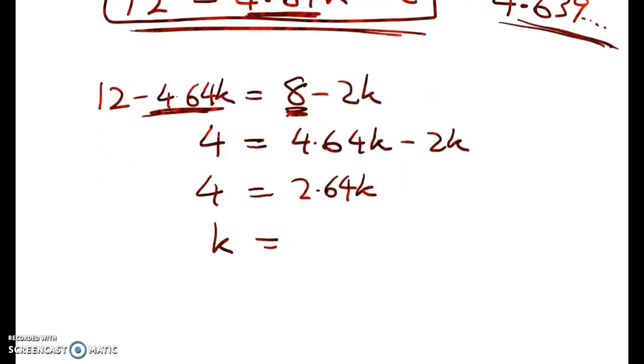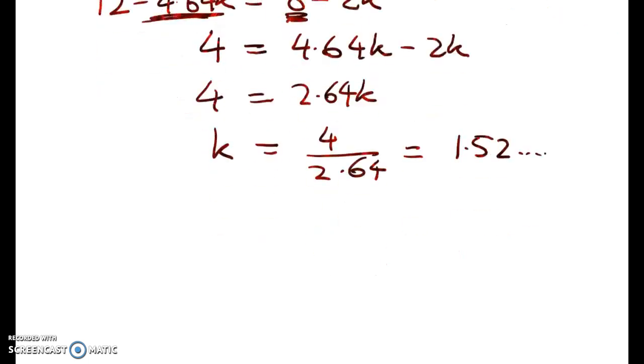k turns out to be 4 over 2.64, which is about 1.52. Again, try not to round. And what do we have for c? And c was equal to 8 minus 2k. So c is equal to 8 minus that thing there, which is 4.96.